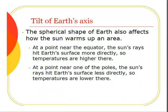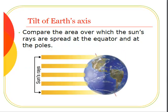The spherical shape of Earth also affects how the Sun warms up an area. At a point near the equator, the Sun's rays hit the Earth's surface more directly, so temperatures are higher there. At a point near one of the poles, the Sun's rays hit Earth's surface less directly, so temperatures are lower there. The Sun's rays are spread more towards the equator and less towards the poles.